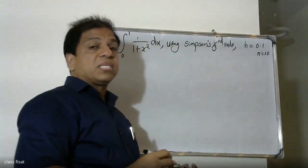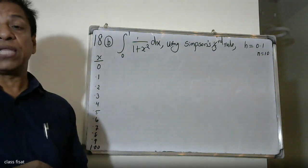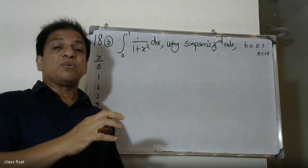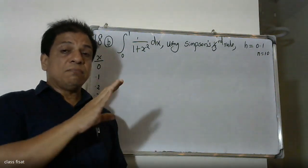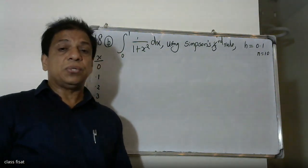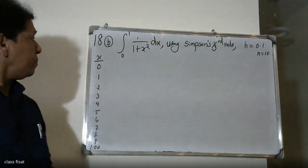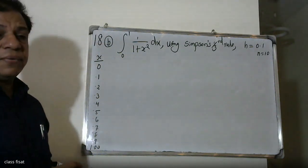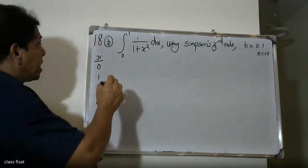This is an even number of intervals, n equal to 10. Since n=10 is even, we can apply Simpson's one-third rule.